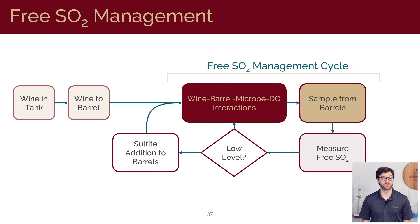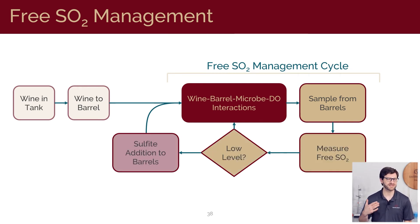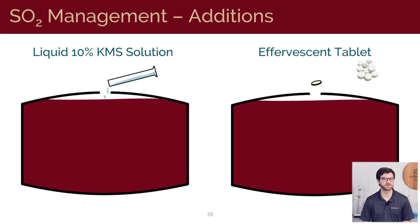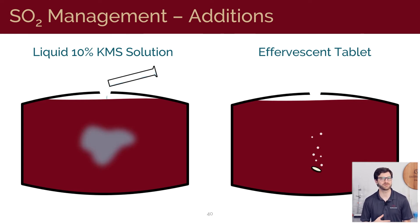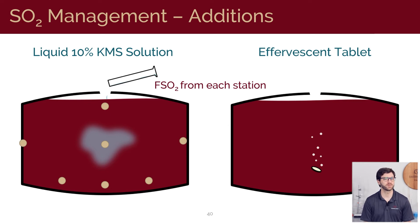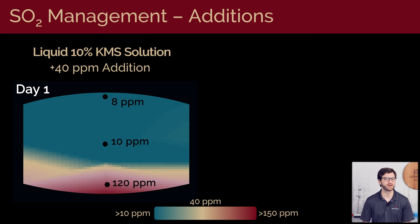We've measured a free SO2 value of our sample and we've decided to make an addition. Let's consider what happens in barrel when we add sulfites. For this study we chose two of the more common methods for adding sulfites to barrels: an aqueous potassium metabisulfite solution and effervescent or Camden tablets. We want to understand how these additions affect wine throughout the barrel and how this changes over time. We built an experimental facility with barrels instrumented with several sampling points at different locations where we could draw a small sample and analyze it for free SO2.